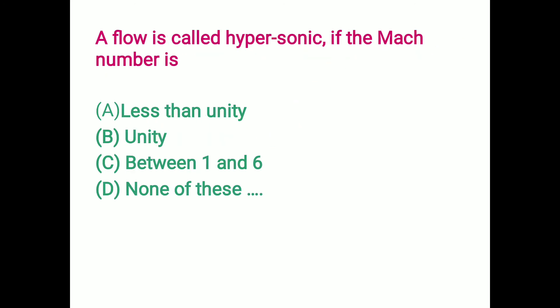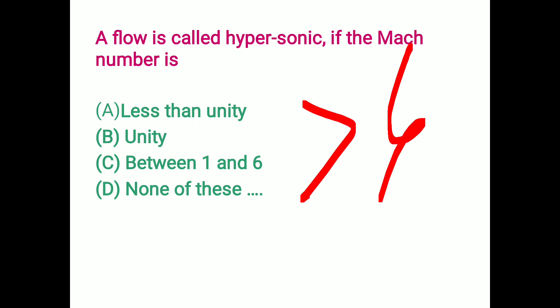The flow is called hypersonic when the Mach number is greater than 6. To summarize: subsonic is Mach less than 1, sonic is Mach equals 1, supersonic is Mach between 1 and 6, and hypersonic is Mach greater than 6. Option D is the correct answer.